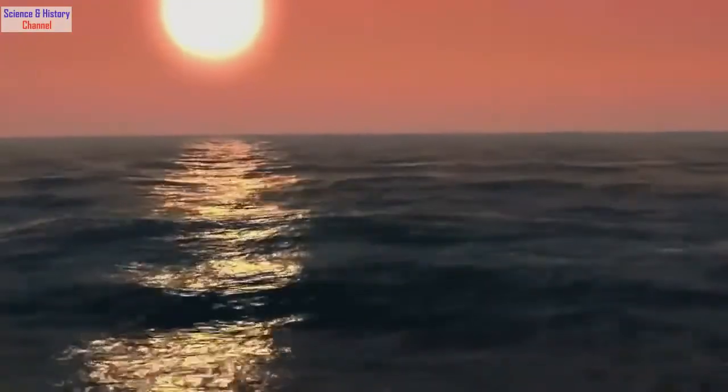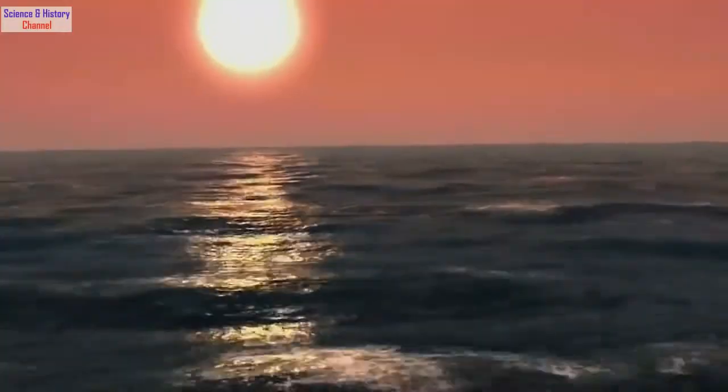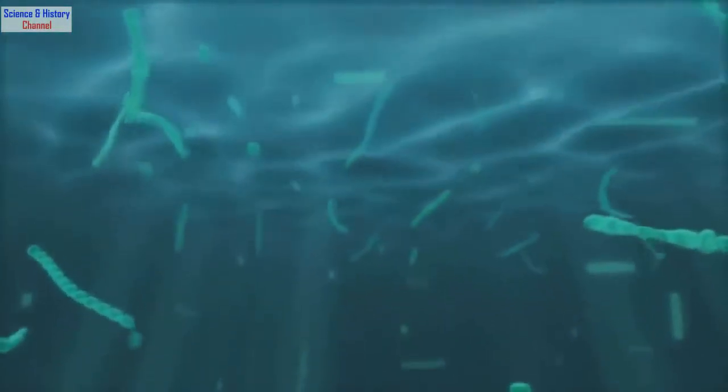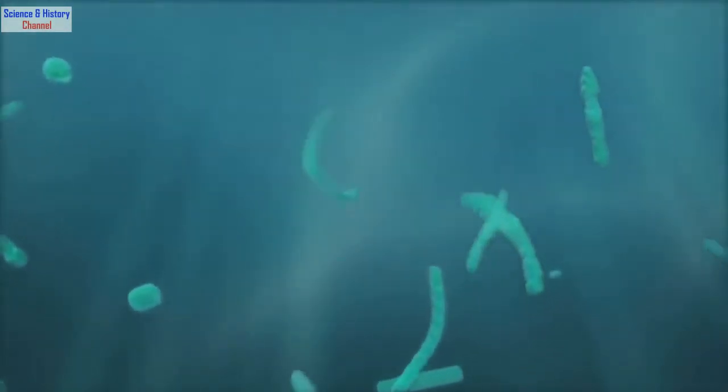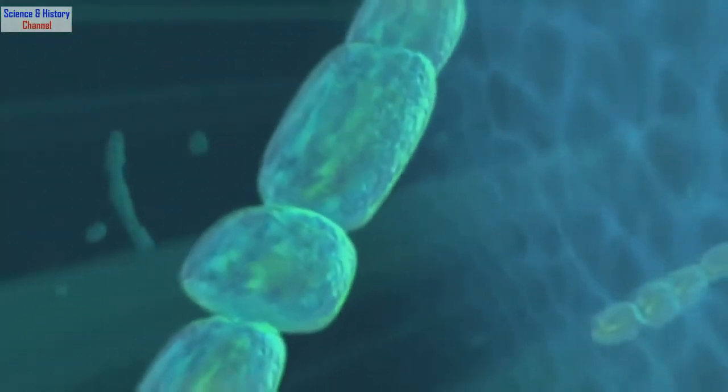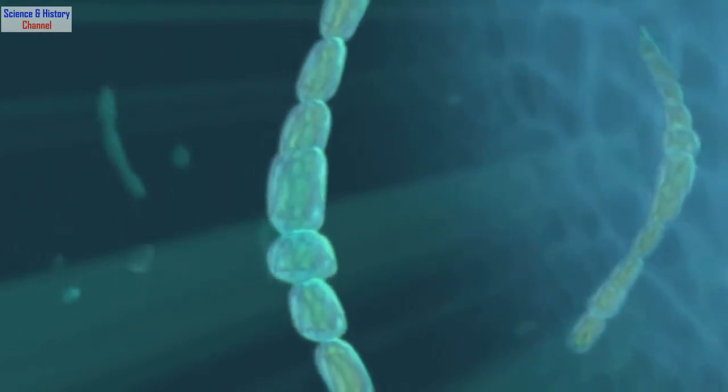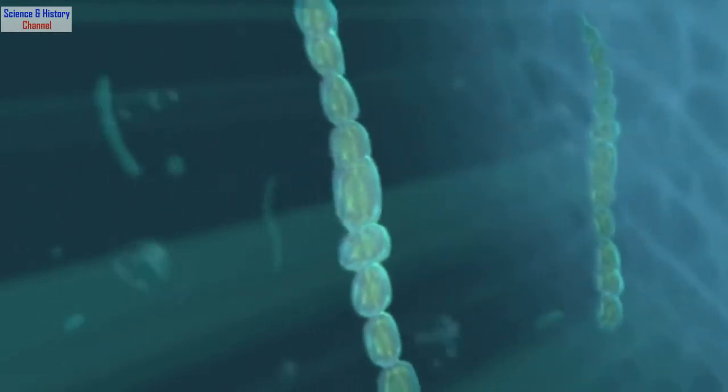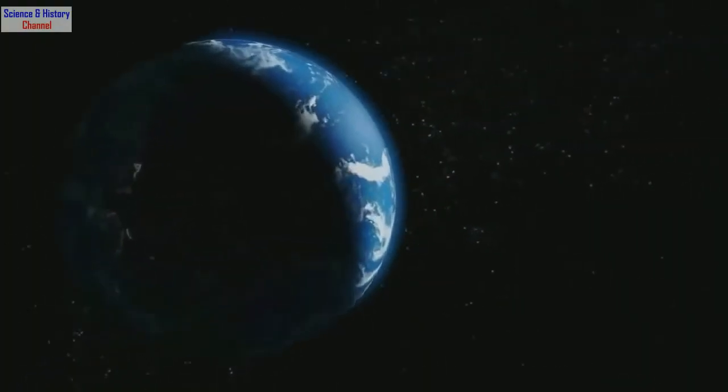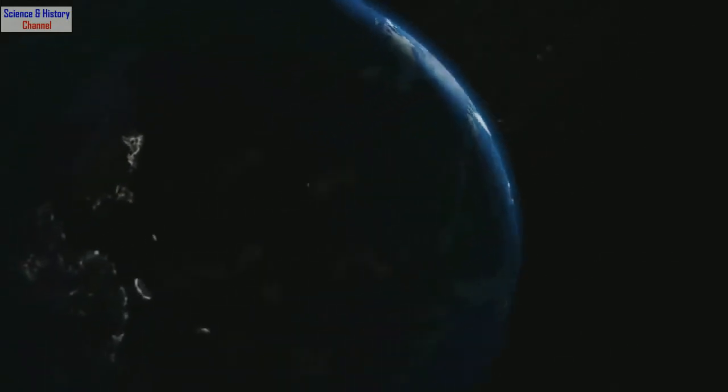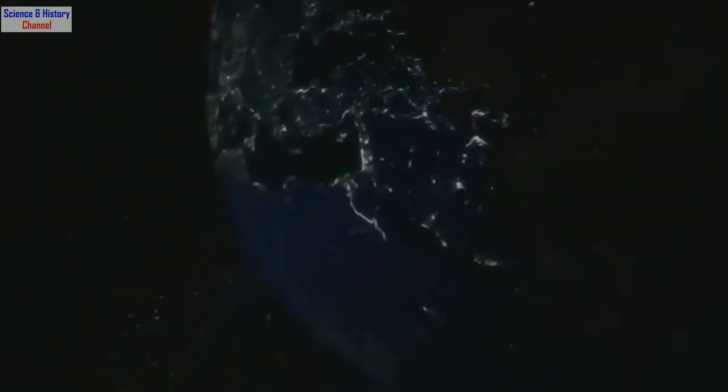Two and a half billion years ago, some very special bacteria figure out how to consume the sun's energy to live. In doing this, they also create the most important waste product in the history of the world: oxygen. Soon, oxygen will remake our world, but first it has another important job to do.